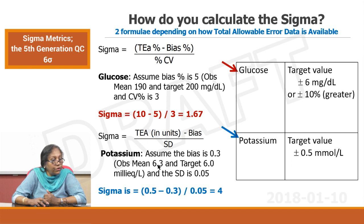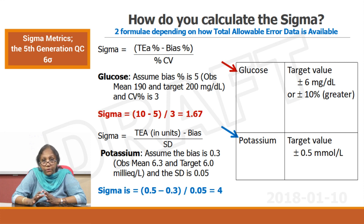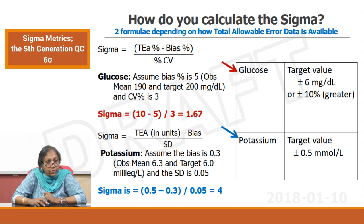Another example — in units for potassium: the potassium target value is plus or minus 0.5. Assume the bias is 0.3, the mean is 6.3, the target is 6. In the calculation you will see that you have got a 4 sigma performance, which is a good performance. You will say, oh that is good, maybe I can improve, but at this point I will not worry about my potassium performance. I might worry about my glucose performance. This is how you evaluate your performance by sigma and then setting your tolerance limits.